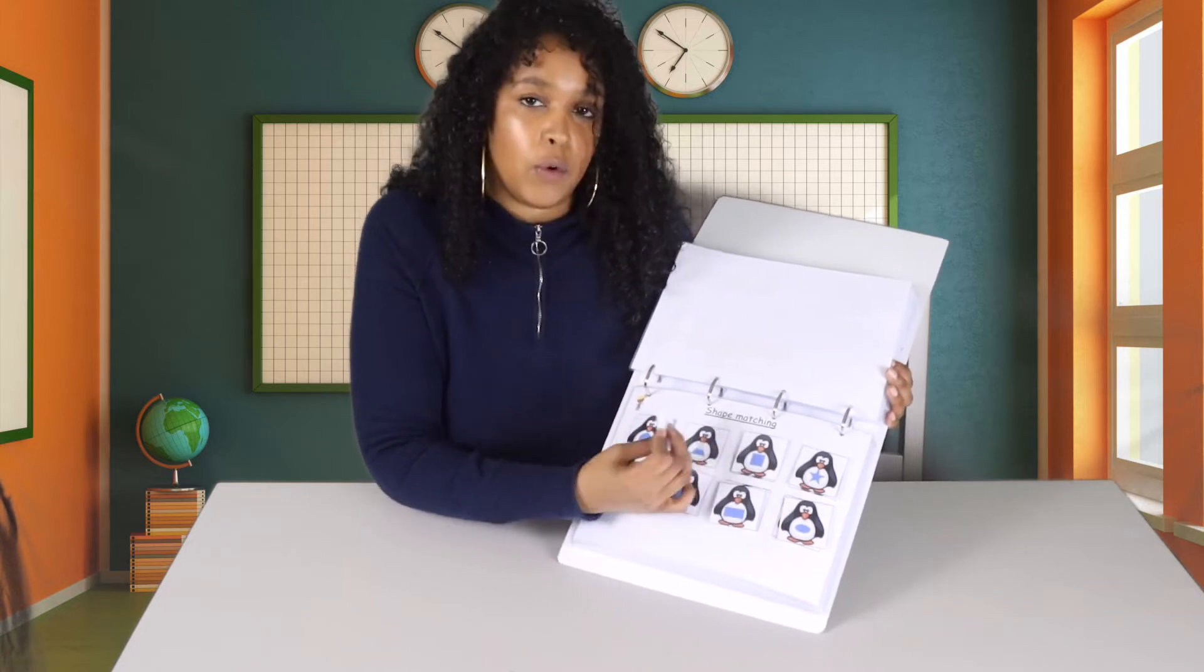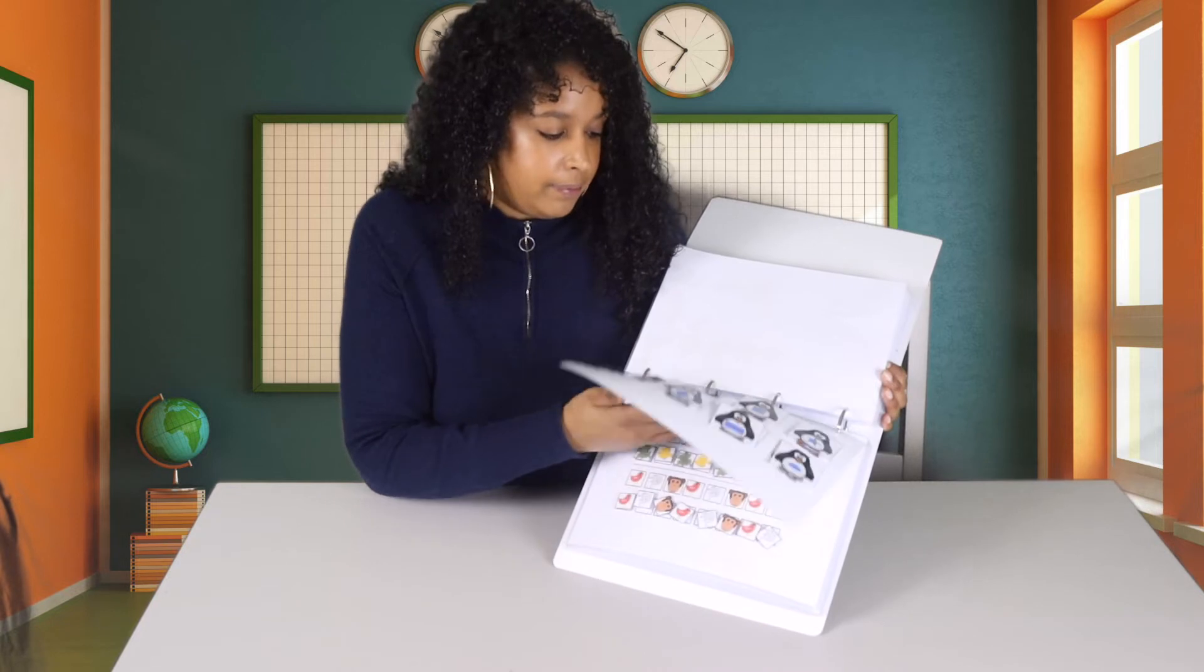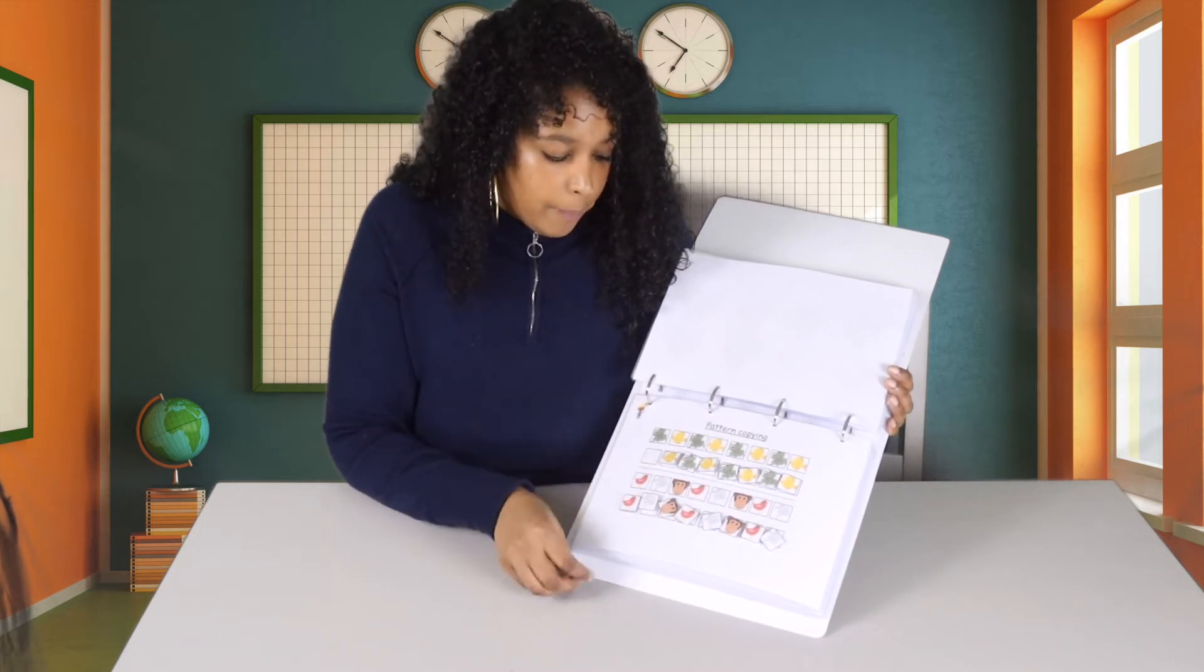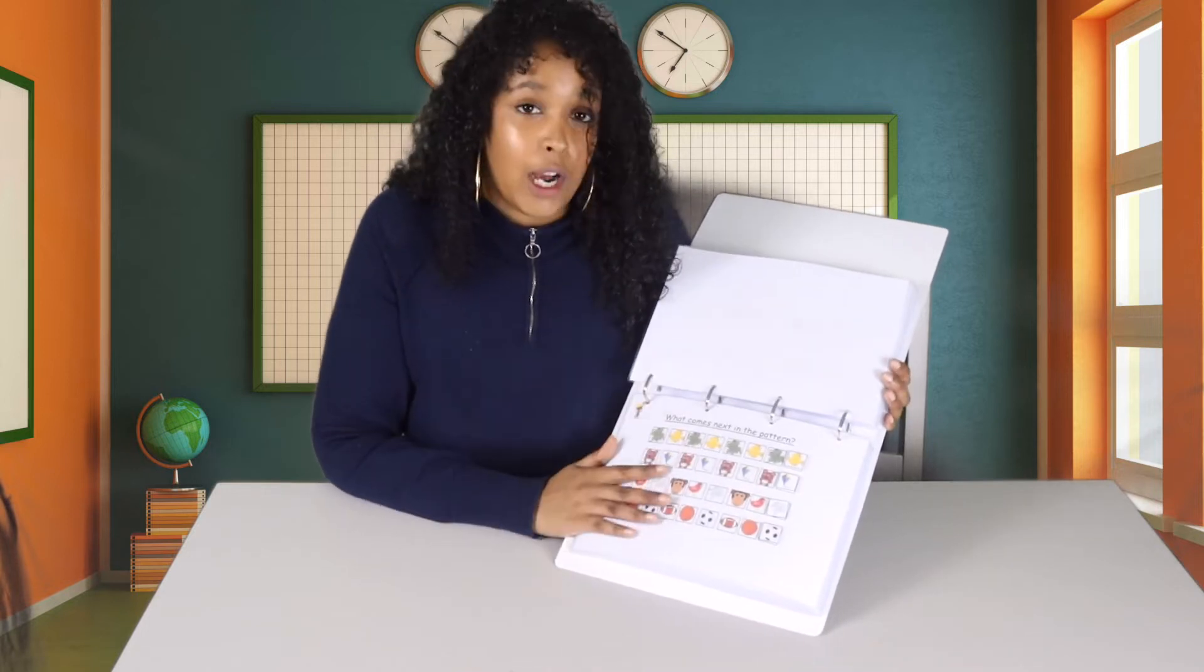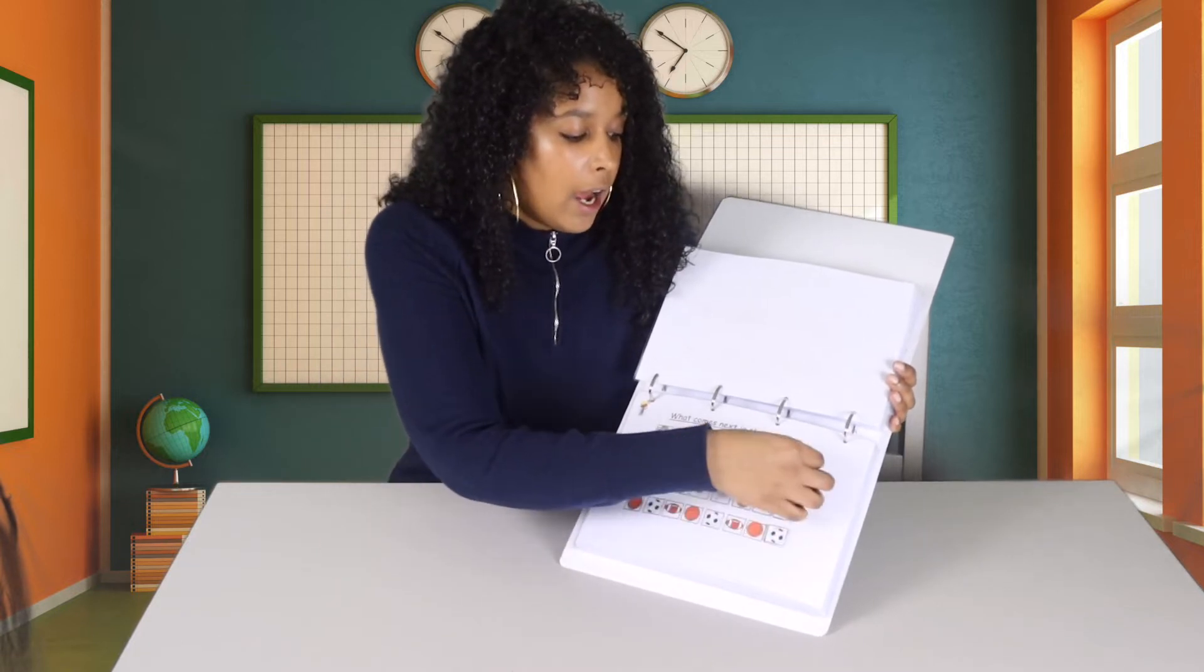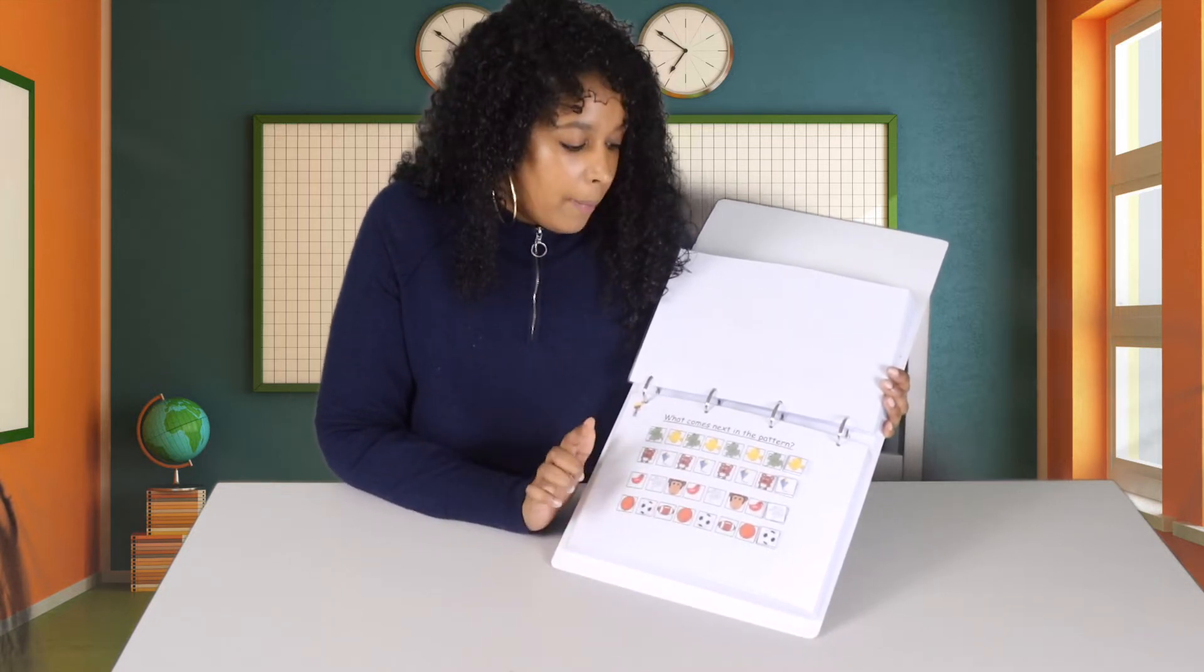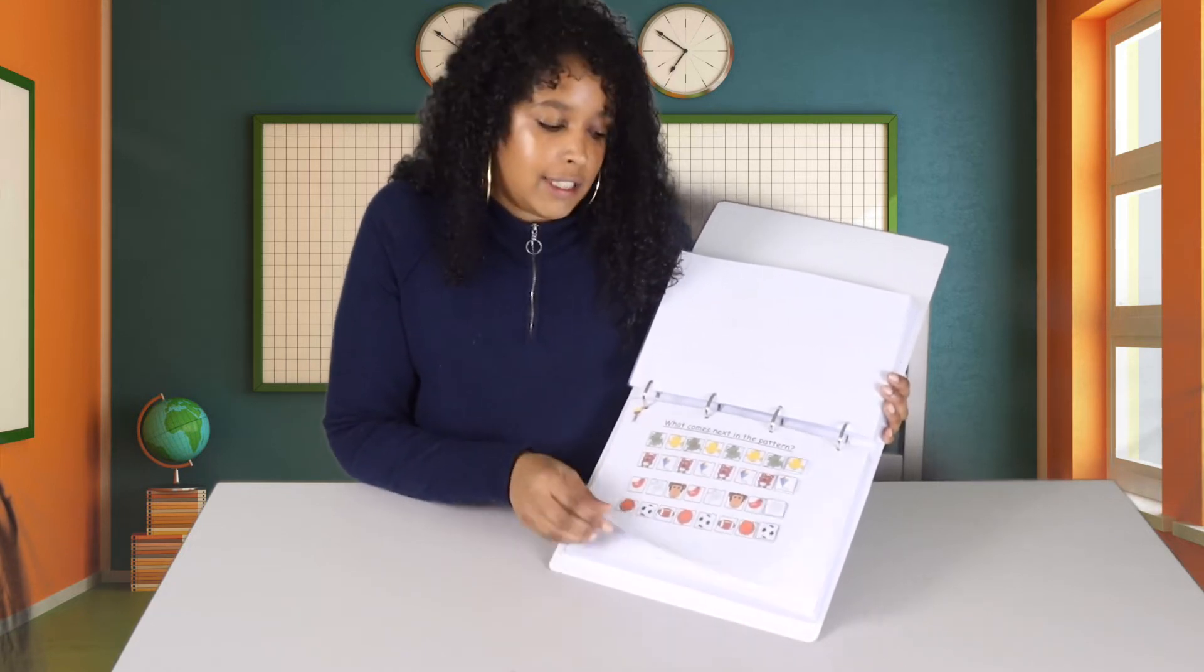If he finds a sheet too easy, I can make the animal slightly smaller and increase the value. On to some shape matching again, but with all the penguins the same. So it's definitely about the shapes and less about the colours. We have pattern copying. Now, Amari's really good at copying patterns. He found this page quite easy. But then we move on to what comes next in the pattern, and that wasn't very strong.